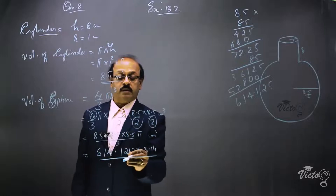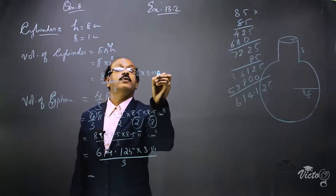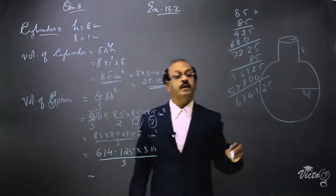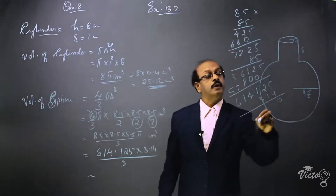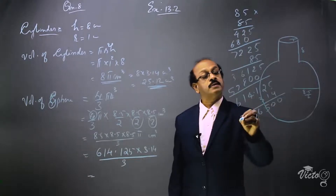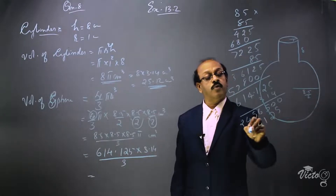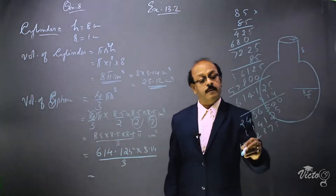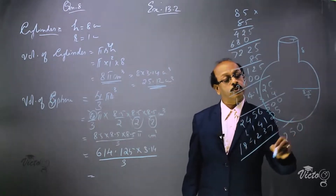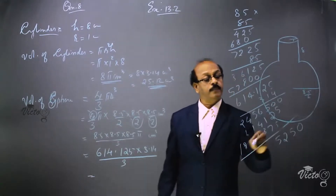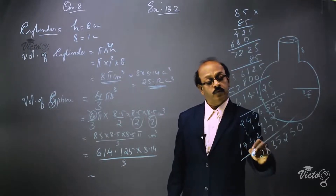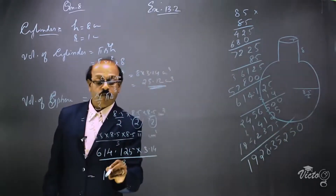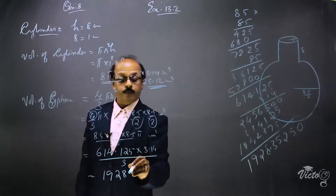The cylinder volume is 8 × 3.14, which equals 25.12 centimeter cube. For the sphere, we multiply 614.125 by pi (3.14), which gives 1928.3525, then divide by 3. Working through the long multiplication: 614.125 × 3.14 = 1928.3525.